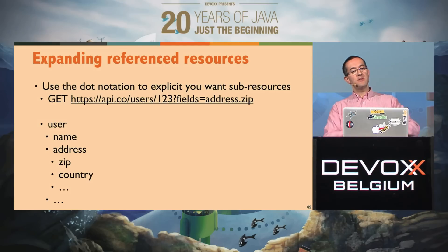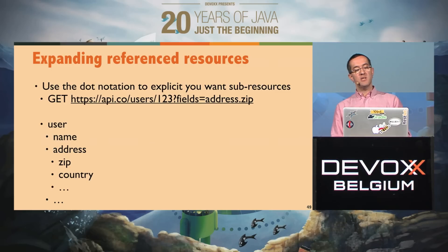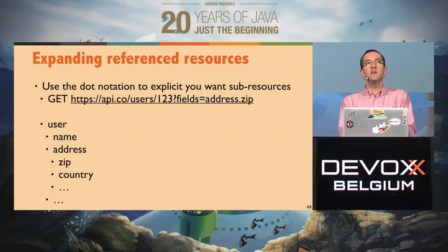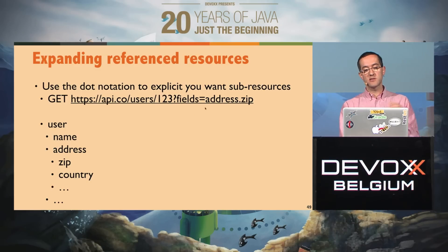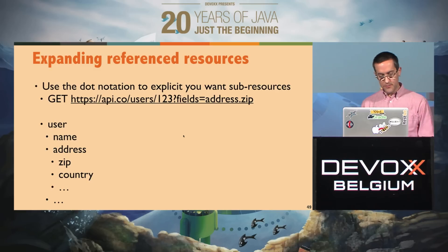Sometimes resources depend on other resources — a user has an address, an address has a zip code and country, etc. Often you see users returned with just top-level properties and references to sub-resources. If you really want to customize and get the full address, you can use field filtering with dot notation — 'fields=address.zip' — because you also want the zip code inside the address. That's a way of expanding sub-resources which are part of that user.